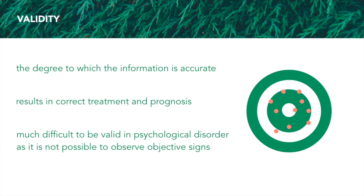Validity results in correct treatment and prognosis, and it is much more difficult to be valid in a psychological disorder as it is not possible to observe objective signs. With physical disorders you can really see them — for example, if you have a tumor, you can really identify the tumor. But psychological signs are really hard to identify, so it's really subjective as well.